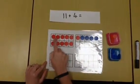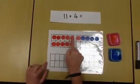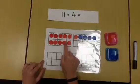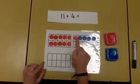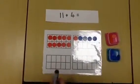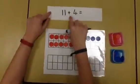Finally, we need to count how many we have all together: 11, 12, 13, 14, 15. The answer to the calculation is 15.